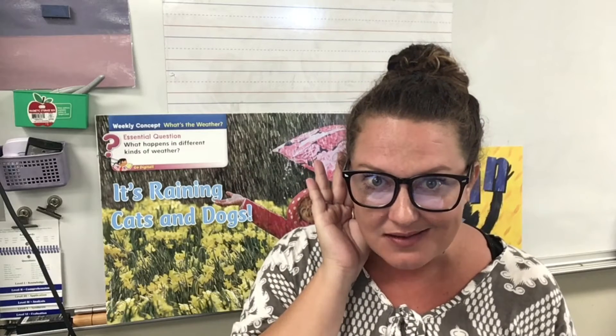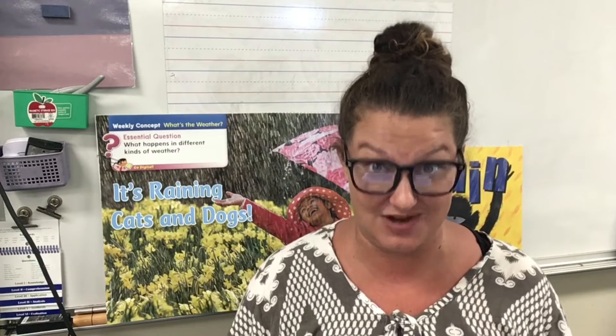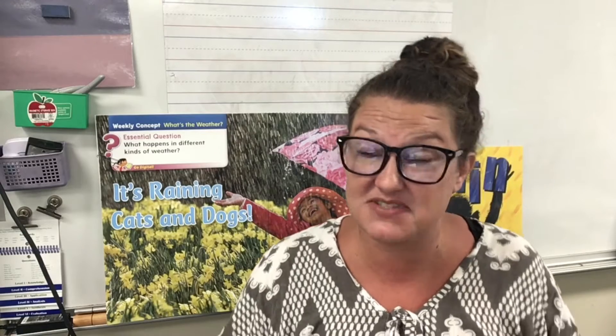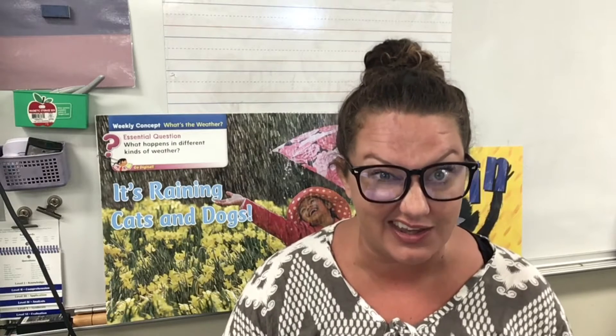I heard some rhyming words in there too. Did you hear the type of weather in the song? Rain is definitely a type of weather. So why do you think the children wanted the rain to go away? We need rain — we know that helps plants grow, it helps a lot of things. But sometimes if you want to go outside and play, rain can be a little tricky.